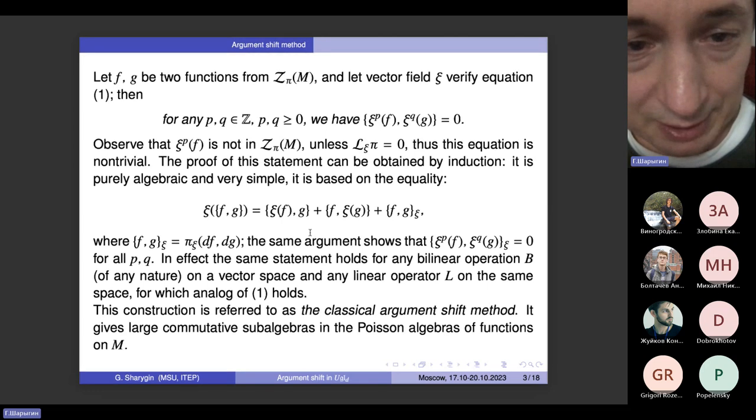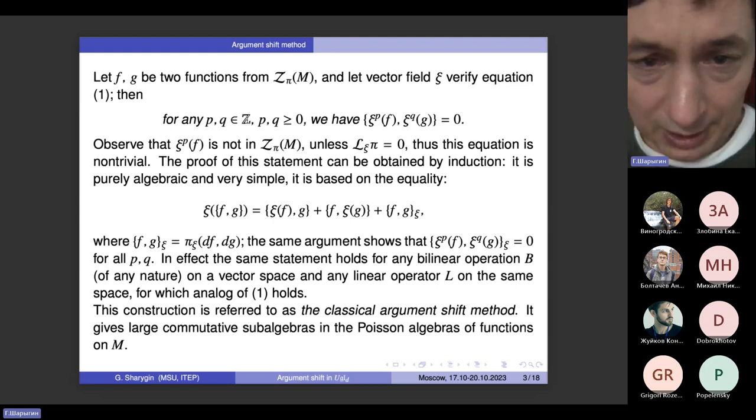But it is not that property which actually we are interested in. The main purpose of having this structure on a Poisson manifold is containing the following result, which I think in this form has first been observed by Wimberg, but in a very important particular case where M is a Lie algebra, has first appeared in the famous paper by Mischenko and Fomenko in 1978.